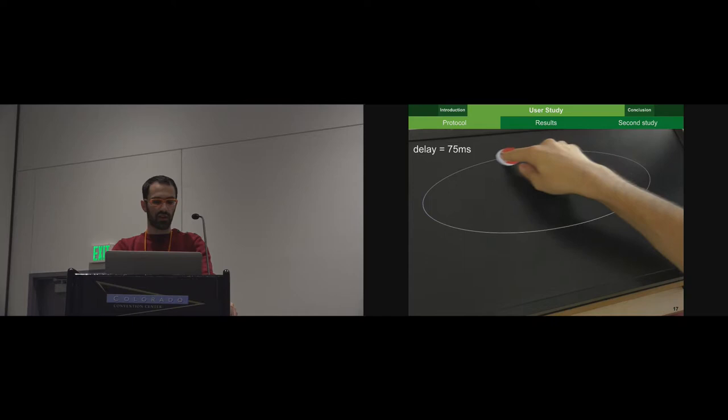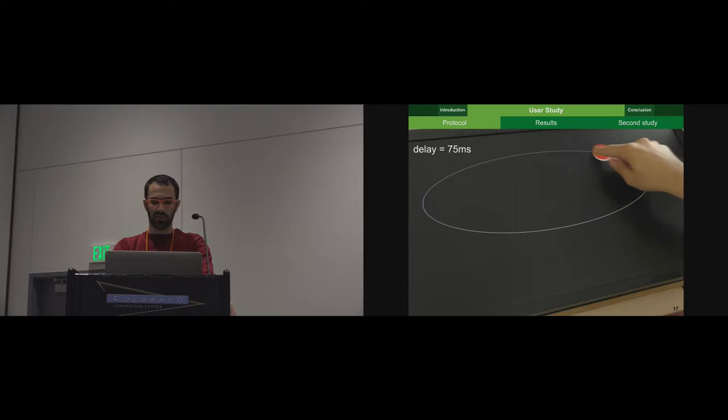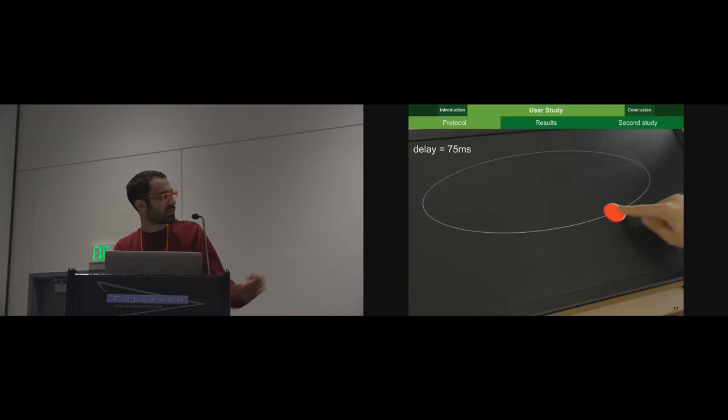So there are three laps per trial. One lap is just for warm-up, and then the error between the red disk and the target is averaged on the last two laps. Between each trial, we display the results to the participants in order to motivate them to improve.